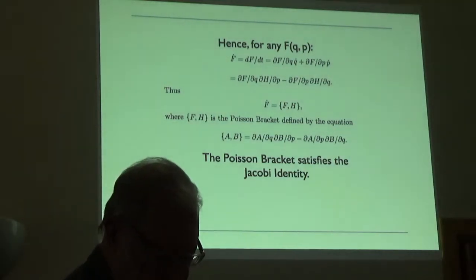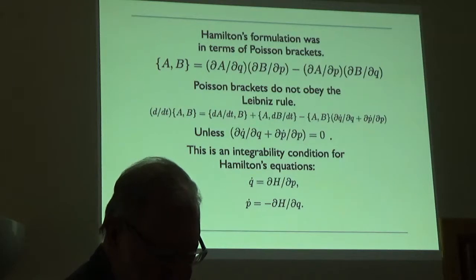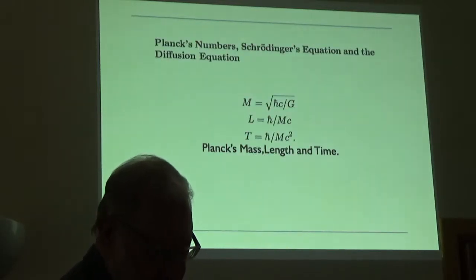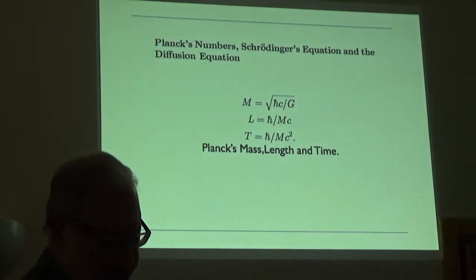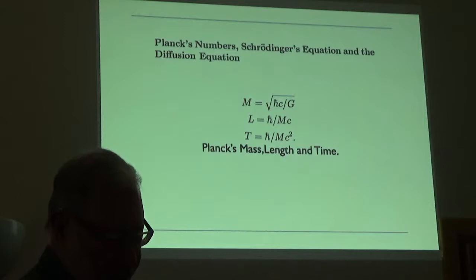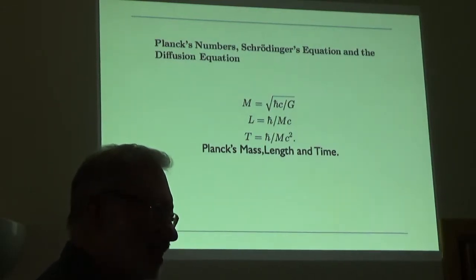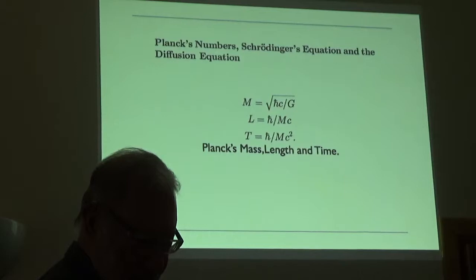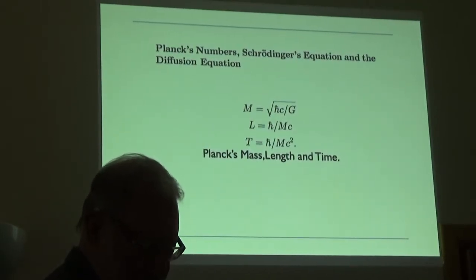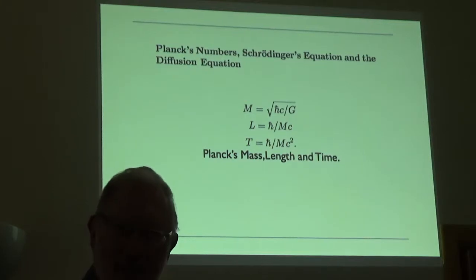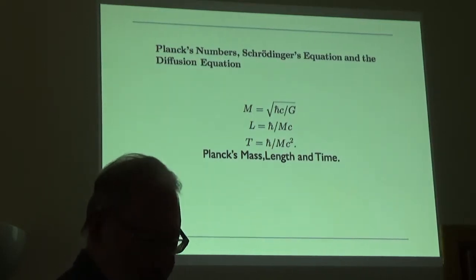Now let me consider the Planck mass, the Planck length, and the Planck time. If you wanted to see what I was about to say, the thing that strikes most is that the Planck mass is a square root of h-bar. G is Newton's constant. But this is really a digression — I think I would skip this slide.